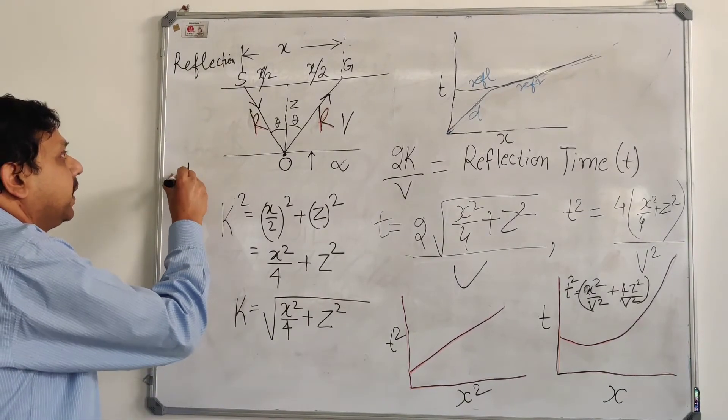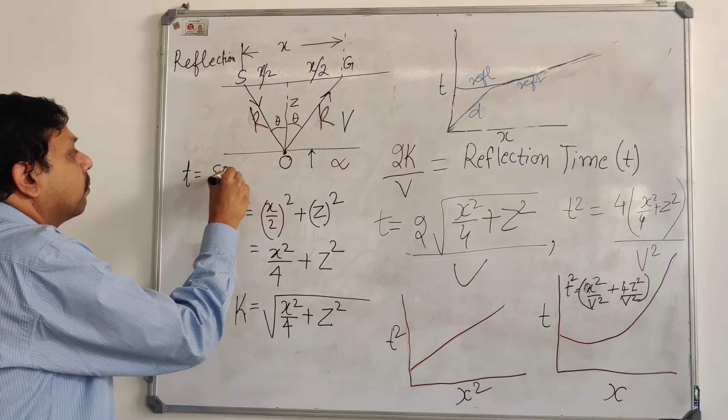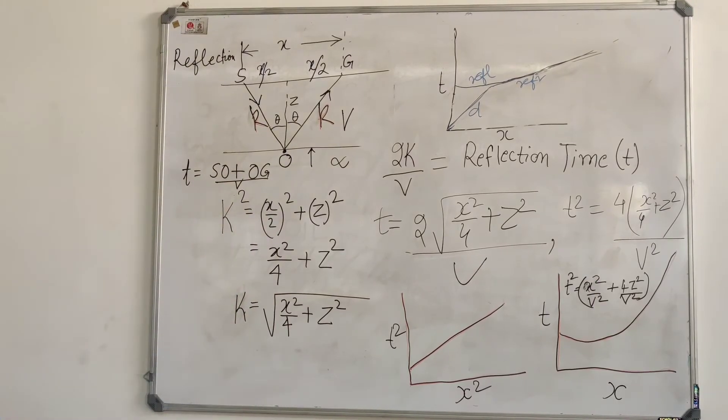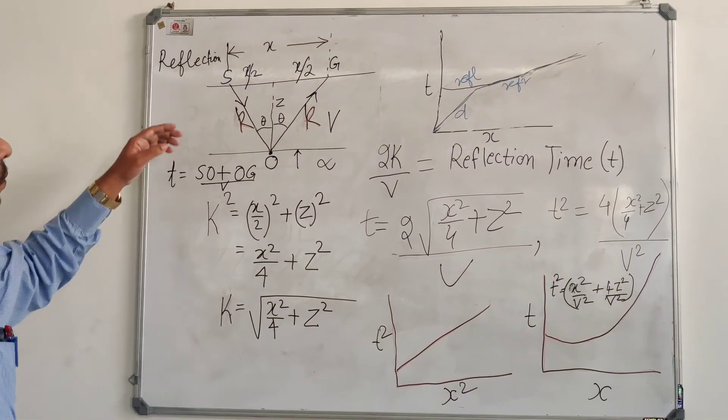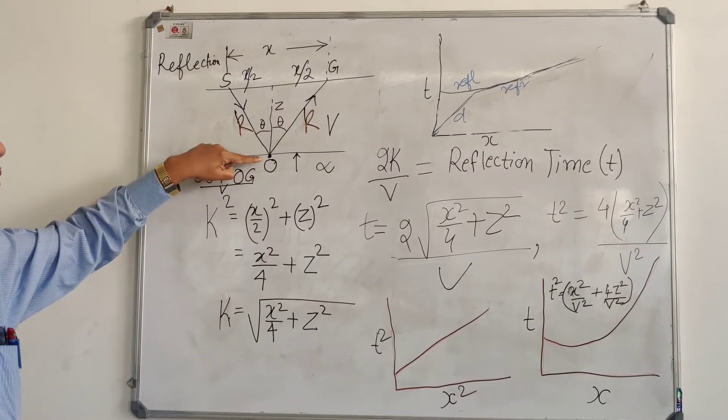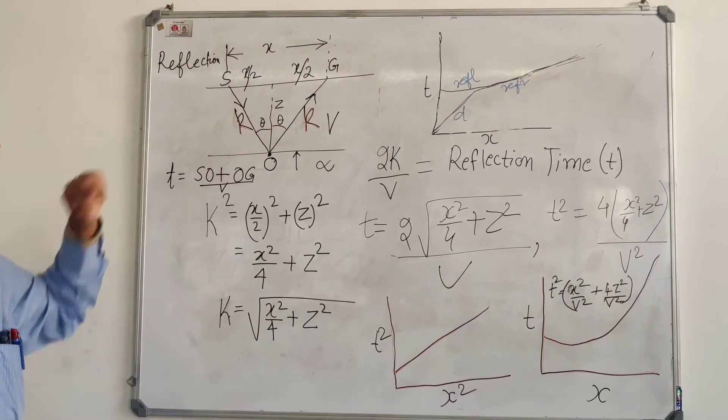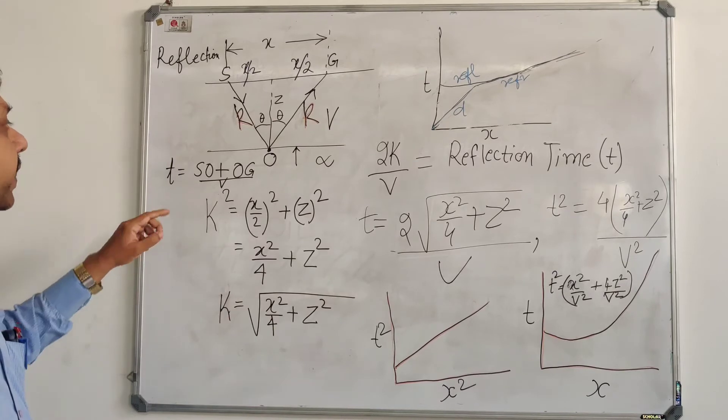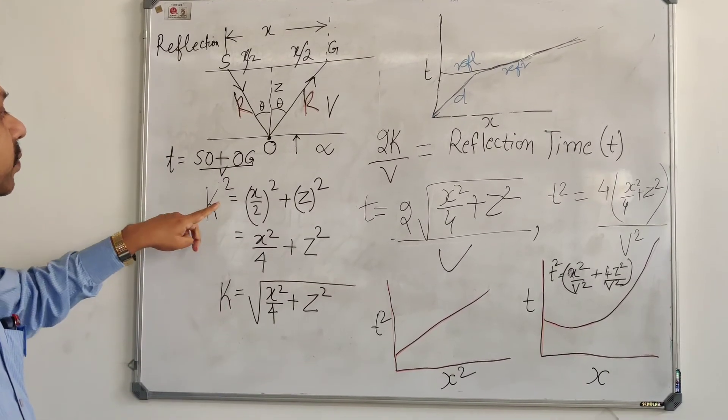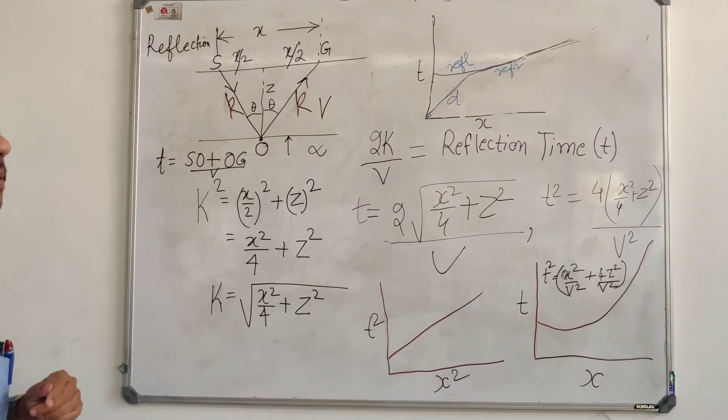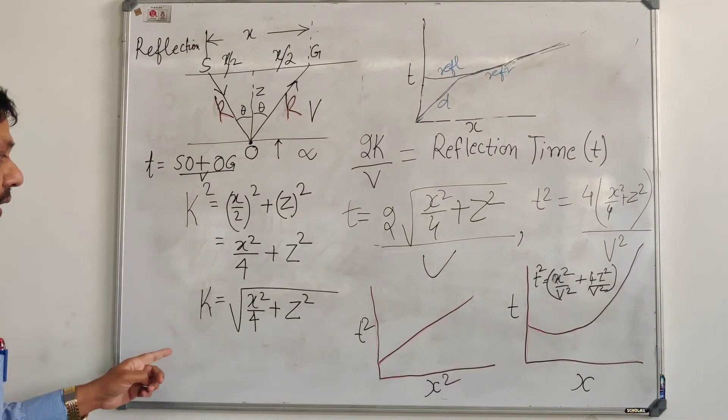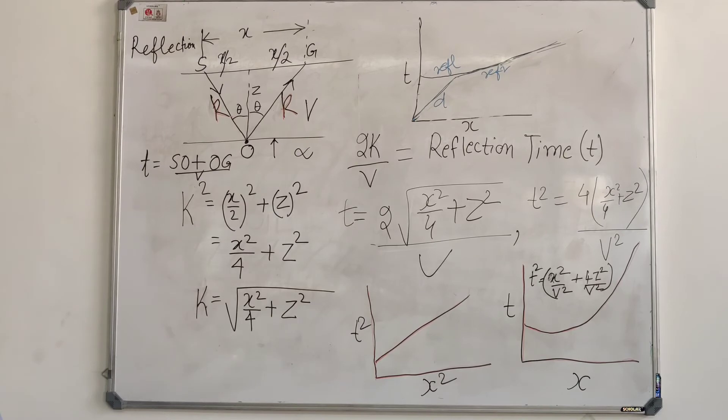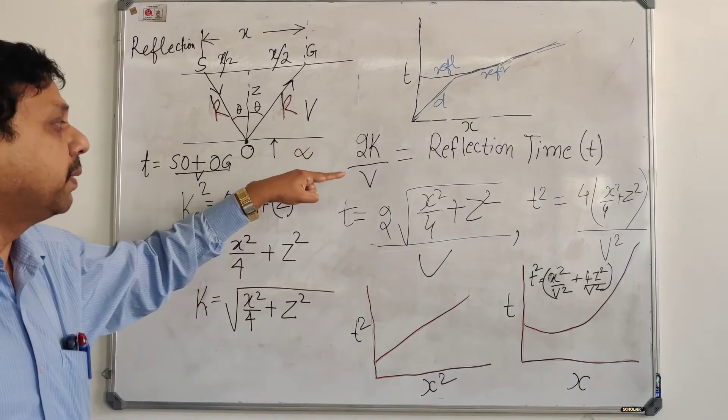So if you take the reflection time T, it is SO plus OG by velocity. V is the velocity of the first layer. Now we know that if we project a line from O to the ground level, it divides the offset into X by 2 and X by 2. So K square is equal to X by 2 whole square plus Z square using the Pythagorean theorem. And K is equal to square root of X square by 4 plus Z square.